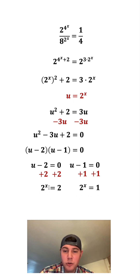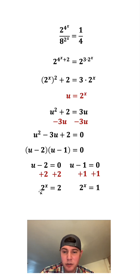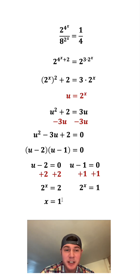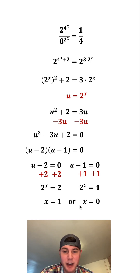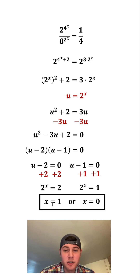So this says 2 to the x is equal to 2. Well, 2 to the 1 is equal to 2, so that means x can equal 1. Or 2 to the x equals 1 — well, 2 to the 0 power is equal to 1. So that means x could equal 0. And these are the two possible values for x.